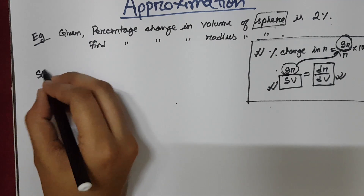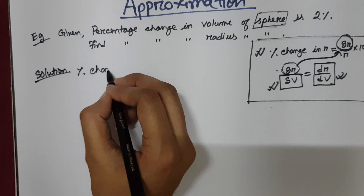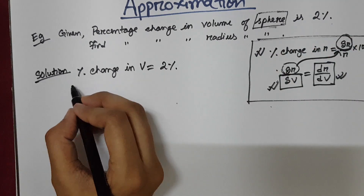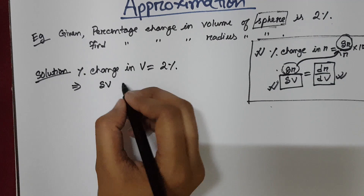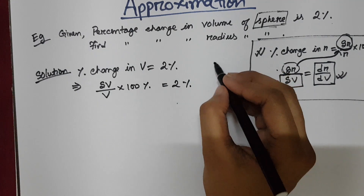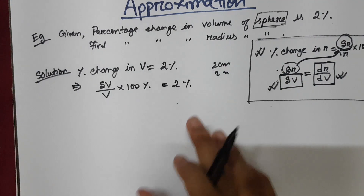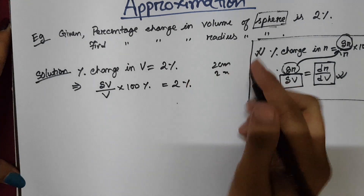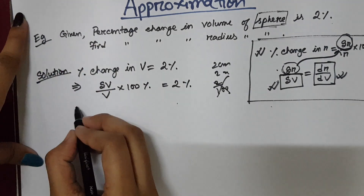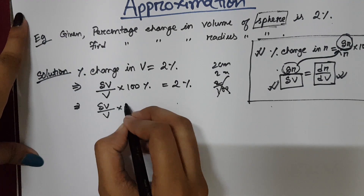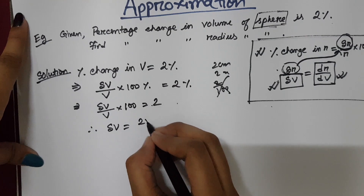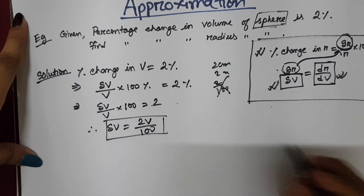The percentage change in volume is given as 2 percent. Writing this as a formula: del v by actual v into 100 percent equals 2 percent. The percentage signs cancel out, so del v by v into 100 equals 2. By cross-multiplying, we get del v equals 2v by 100. So we now have the value of del v.